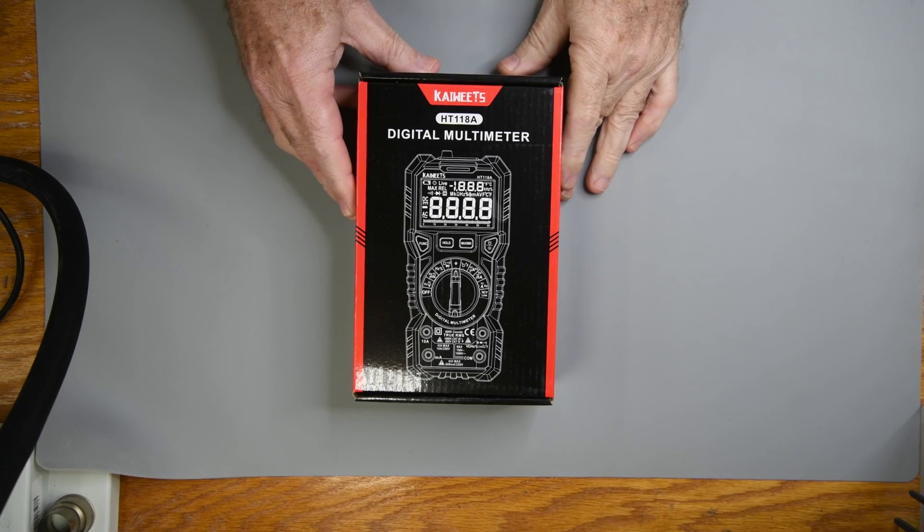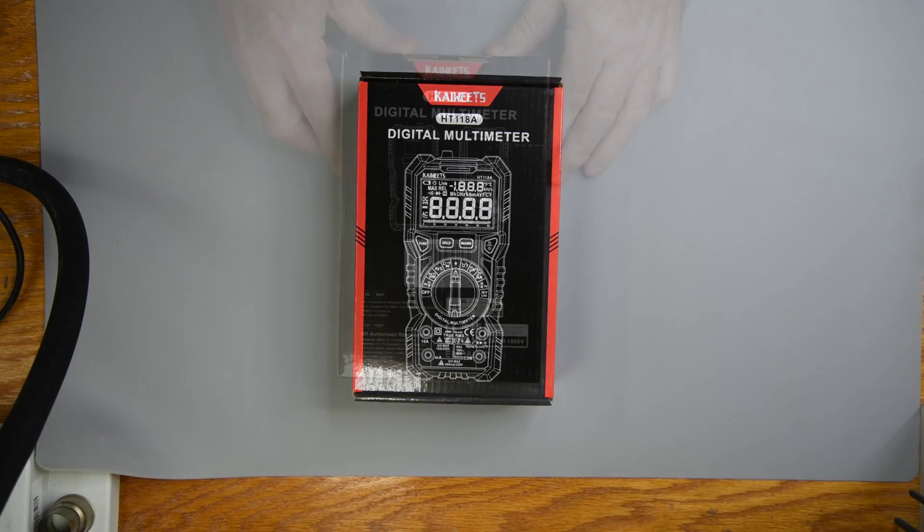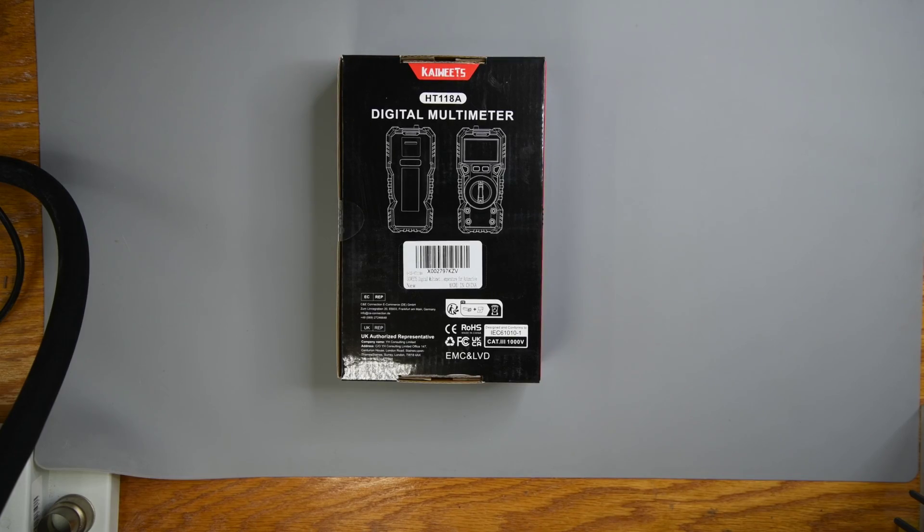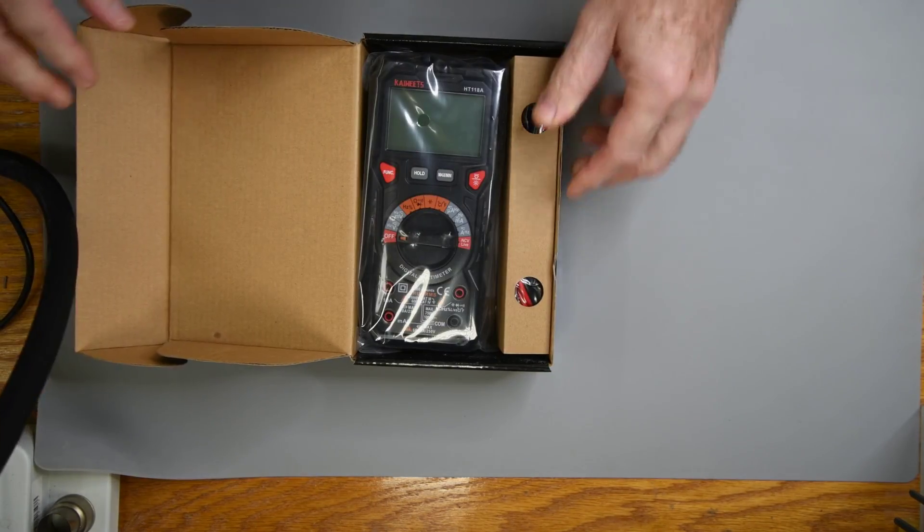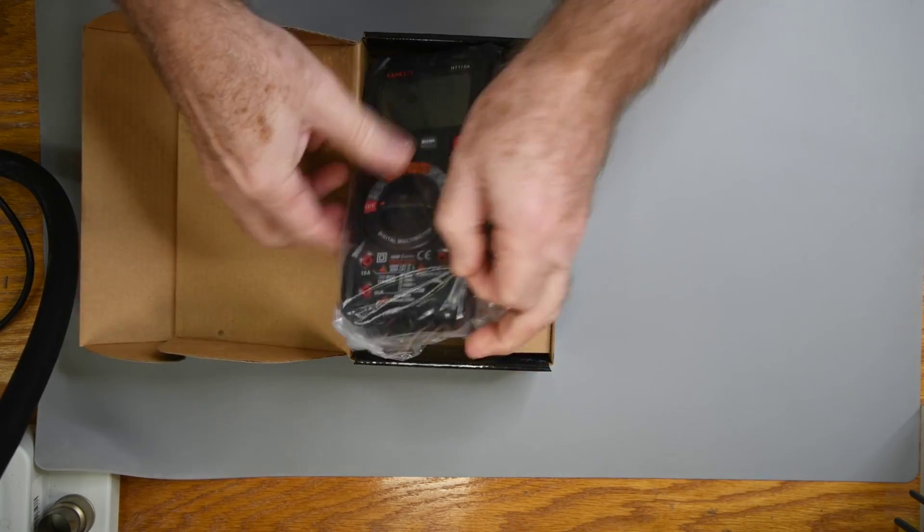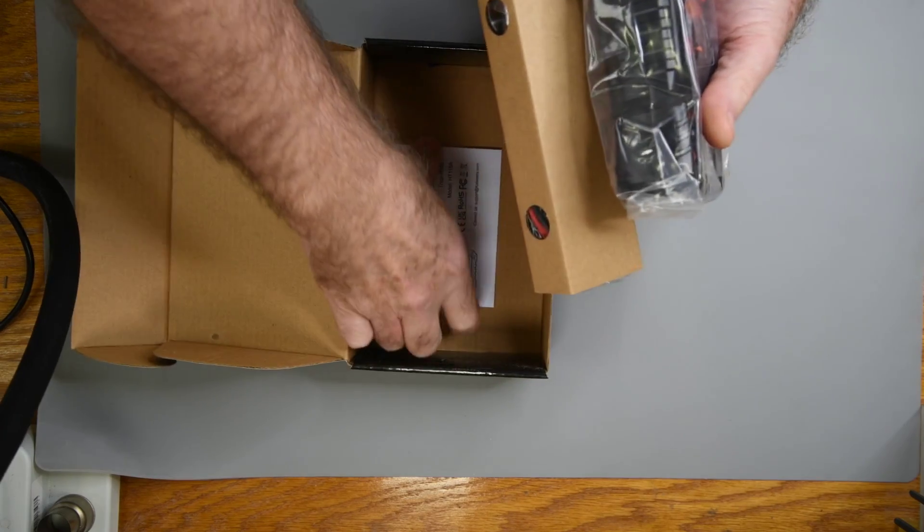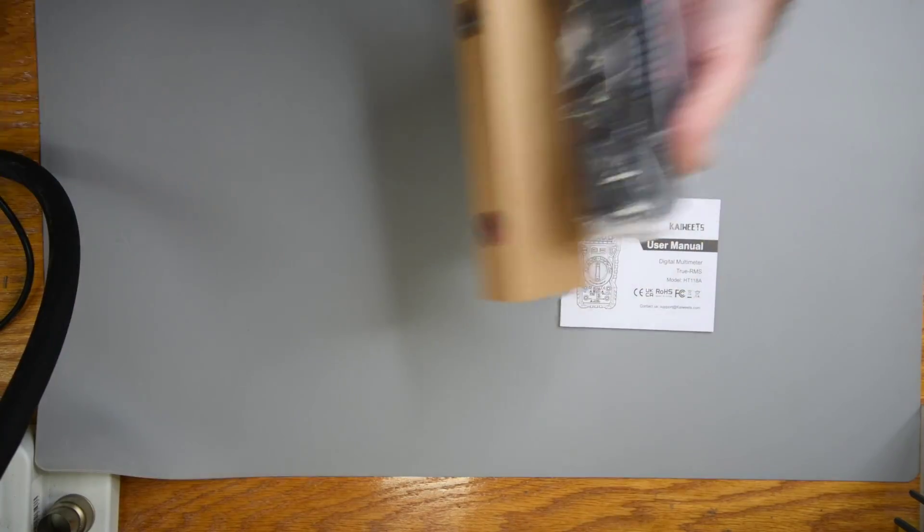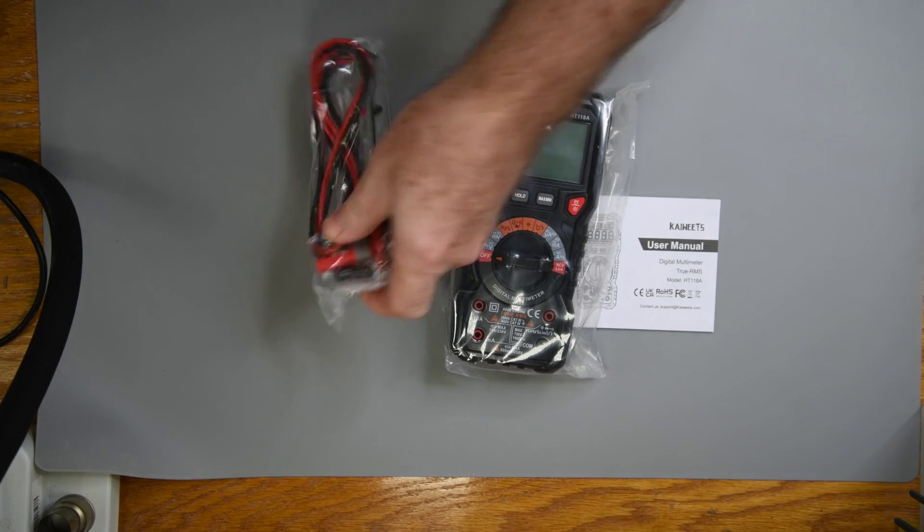So I ended up ordering this Kaewitz HT118A. I've used this company's test lead sets and been pretty happy with them. This was right around the $35 range. There was an Astro AI branded one that looked identical for about $2 less, but I couldn't get their homepage to load correctly. So I couldn't download the user manual. That right there made the Kaewitz worth the extra $2.